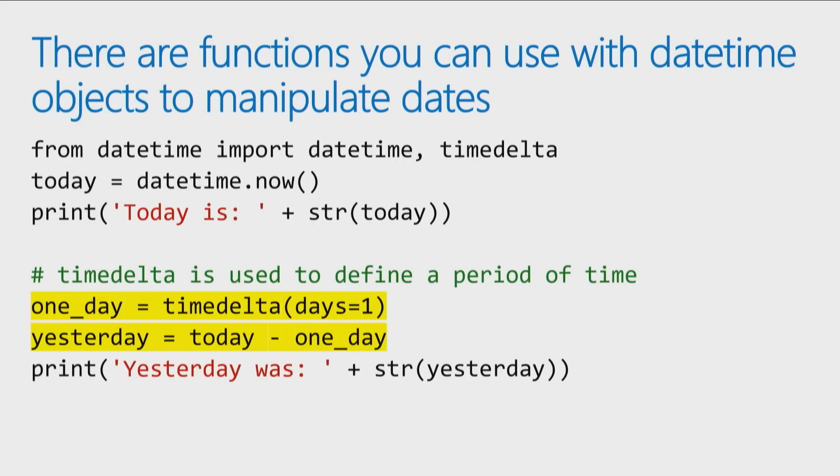So I can define a time period of one day, and it's a timedelta of days equals one. If I wanted days equals three, it would be three days. If I wanted to measure a week ago, I could say weeks equals one. And I simply say, yesterday equals today minus one day.